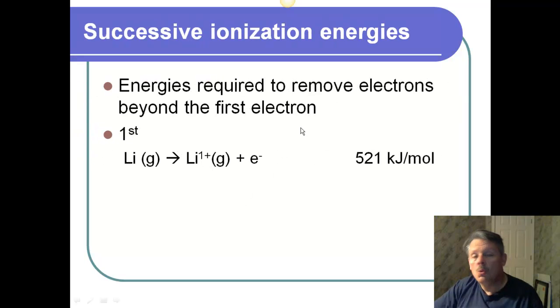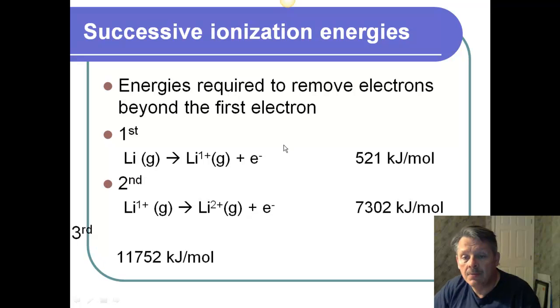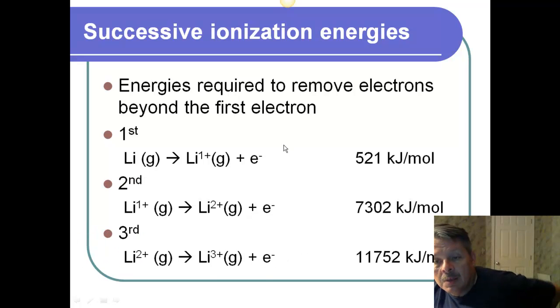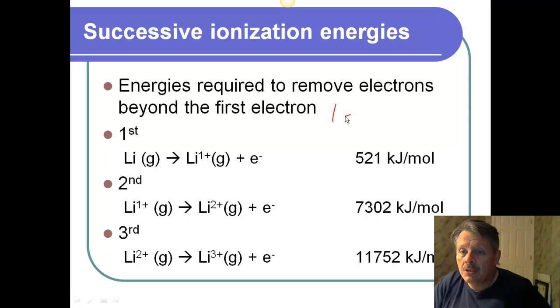So, we could conceivably take an electron away from lithium. We could conceivably take two electrons away or three electrons away. Now, remember where lithium is on the periodic table and what its electron configuration is. Because if you remember that it is 1s2, 2s1, it's pretty easy to take this first electron away.